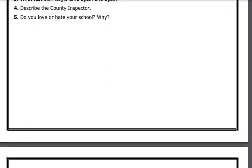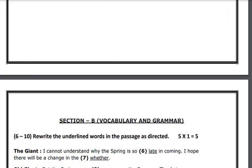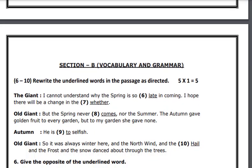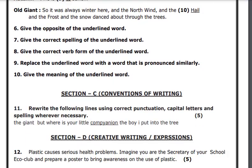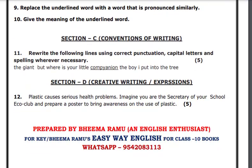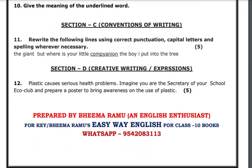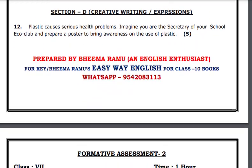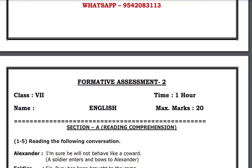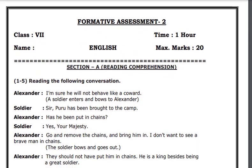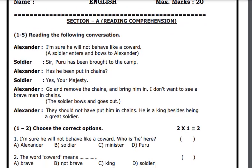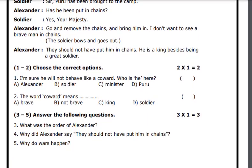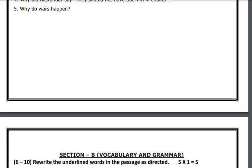Now it's time for eighth class. Here we have four sections: Section A, Section B, Section C conventions of writing — that is punctuation — and Section D creative writing expressions. If you want the PDF file, just watch me and you will get it.